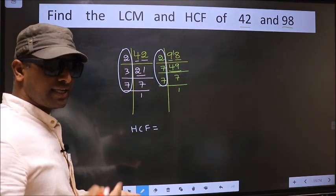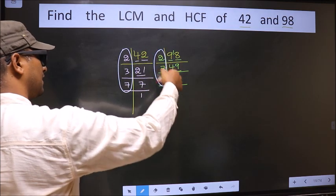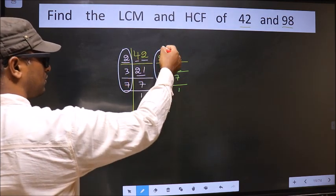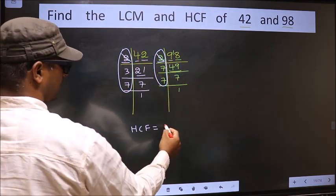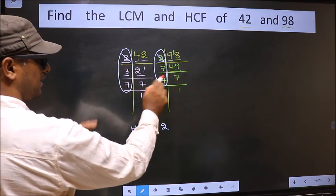So now let us find the numbers which are present here and here. Starting with the number 2, do we have 2 here? Yes. So you cut 2 right here. Next number 3, do we have 3 here? No.